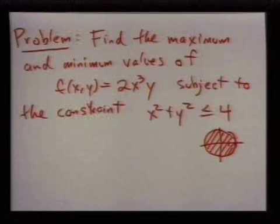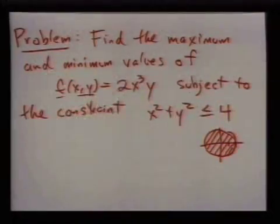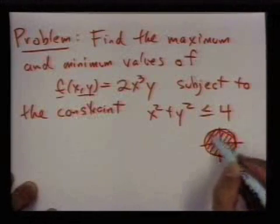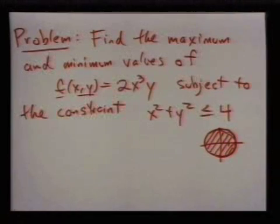And so there are two cases: it could have the maximum or minimum on the inside of this closed disk, in which case it'll be found by searching for critical points of the original function. The other situation is that the maximum or minimum could be on the boundary, in which case we could use Lagrange multipliers.